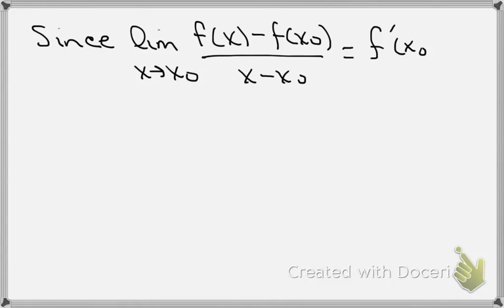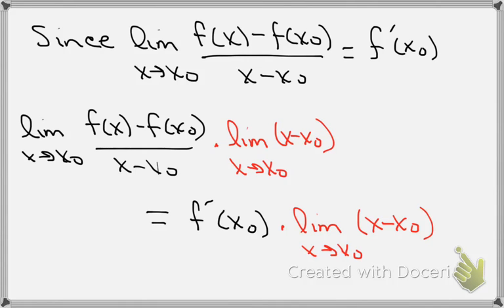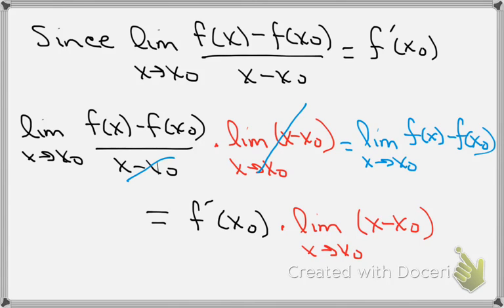Since the limit as x goes to x naught of f of x minus f of x naught over x minus x naught equals f prime of x naught, we can multiply both sides of that equation by the limit as x goes to x naught of x minus x naught — that's what I have in red. If we cancel the x minus x naught, the left hand side, now in blue, becomes the limit as x goes to x naught of f of x minus f of x naught.